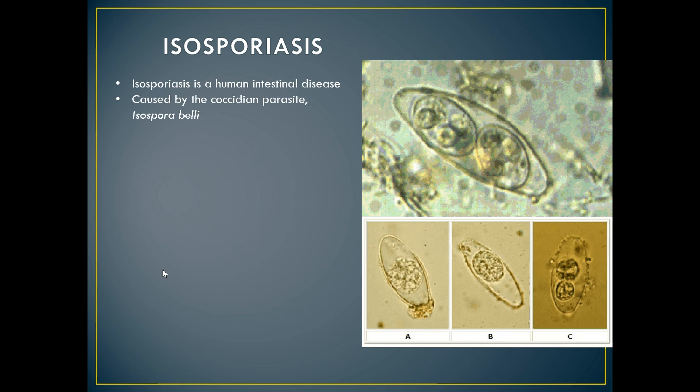Isosporiasis is an intestinal disease caused by a coccidian parasite called Isospora belli. Coccidia are a subclass of microscopic spore-forming, single-cell, intracellular obligate parasites that belong to the Apicomplexa conoidasida. Obligate comes from the root word 'oblige,' meaning to follow. Hence, as obligate intracellular parasites, they must live and reproduce within an animal cell.